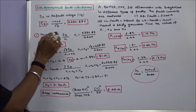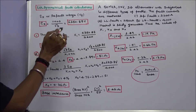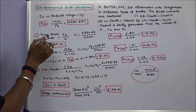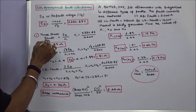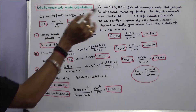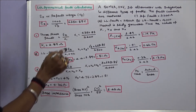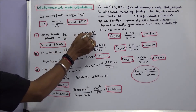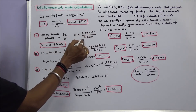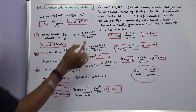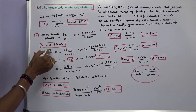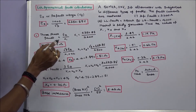For a 3-phase fault, the current equals ER divided by X1. This current is given as 2200 amps. Therefore X1 is equal to 6350.85 divided by 2200, giving X1 equal to 2.89 ohms.